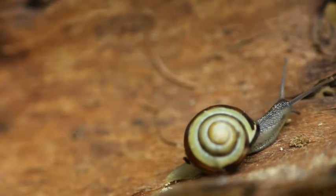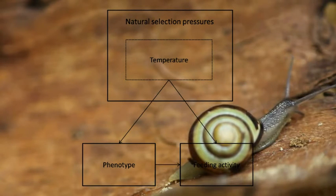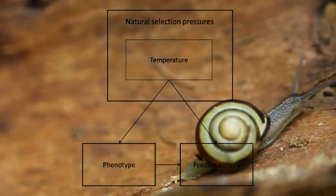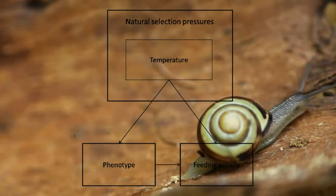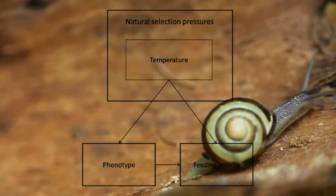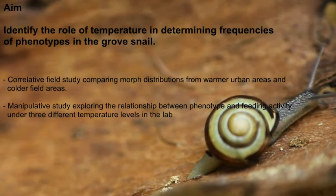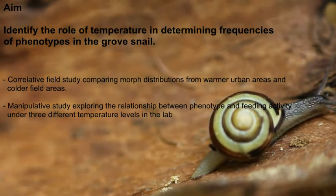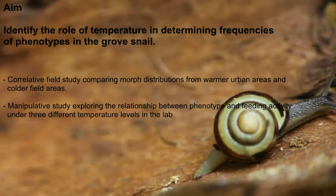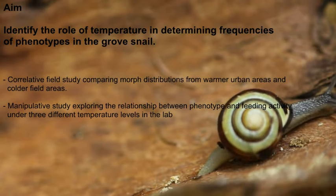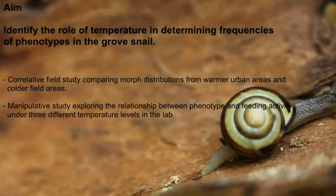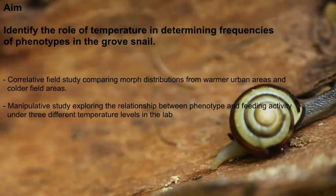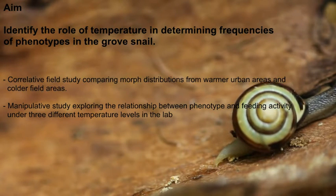We support our study with the following mechanism. Natural selection pressures like temperature influence phenotype frequencies and feeding activity. Metabolism in snails goes faster at warmer temperatures, and the phenotype of the snail also influences its feeding activity. This study aims to identify the role of temperature in determining frequencies of phenotypes in the grovesnail by performing a correlative field study comparing morph distributions from warmer urban areas and cooler field areas. In addition, we perform a manipulative study exploring the relationship between phenotype and feeding activity under three different temperature levels in the lab, to see if morphs are physiologically adapted to certain temperatures.